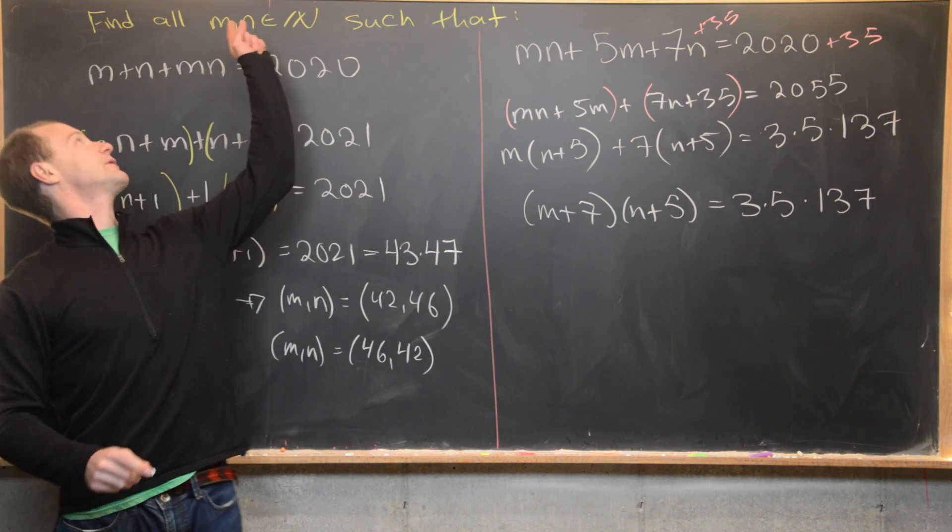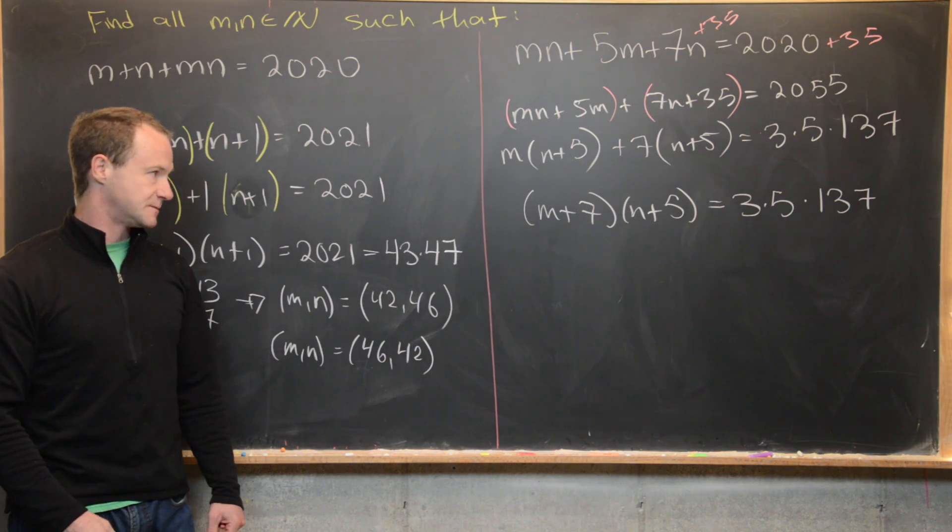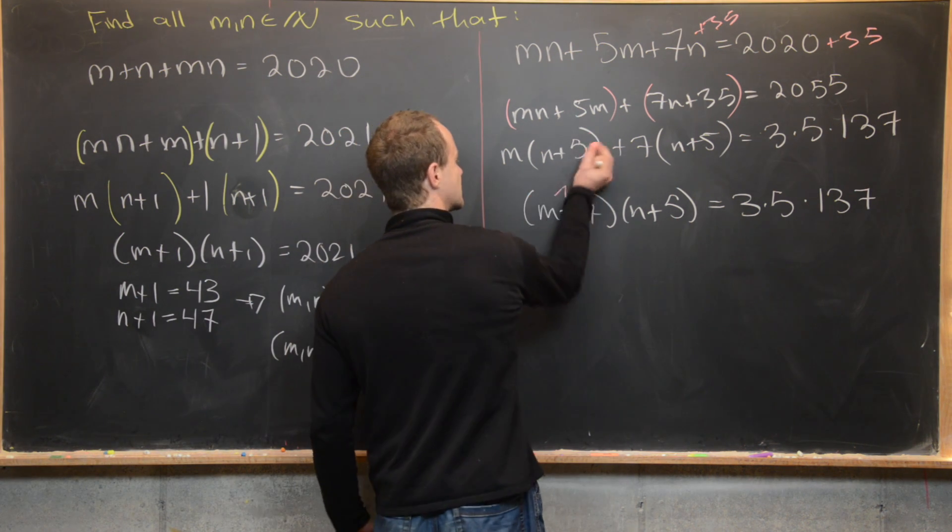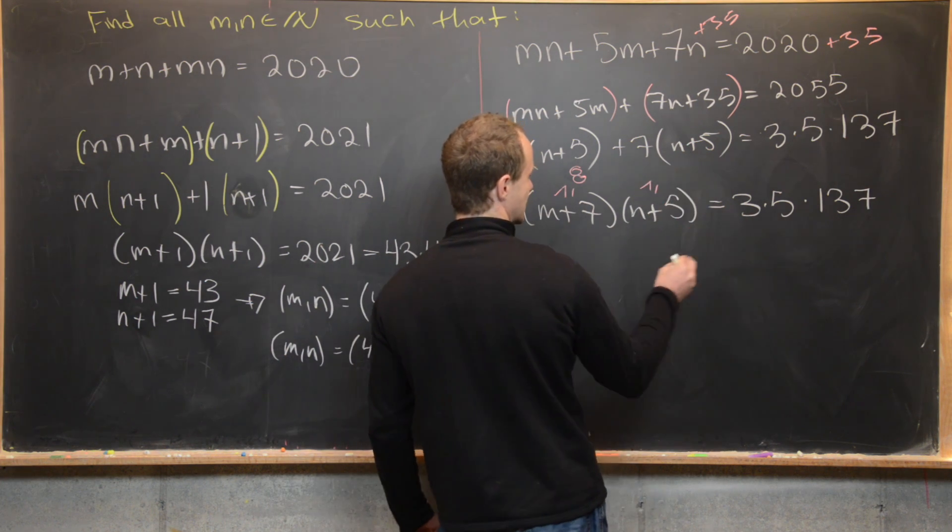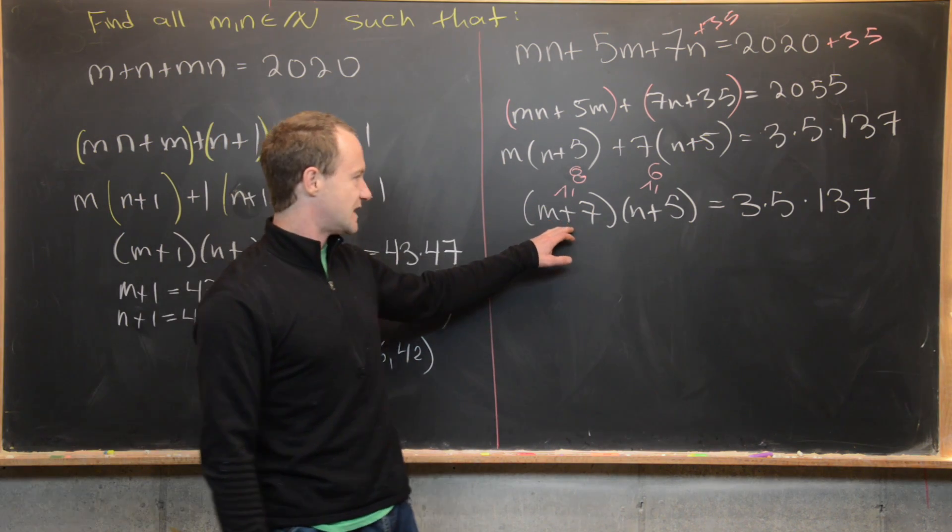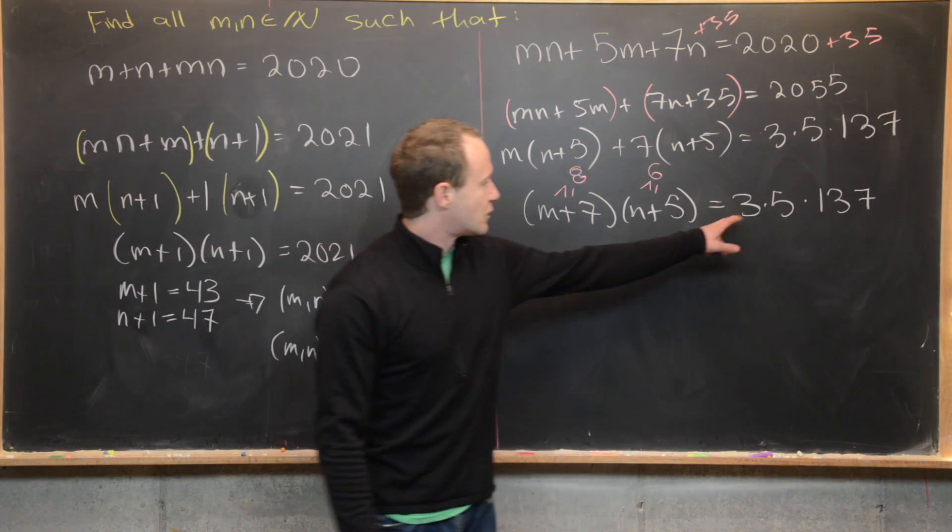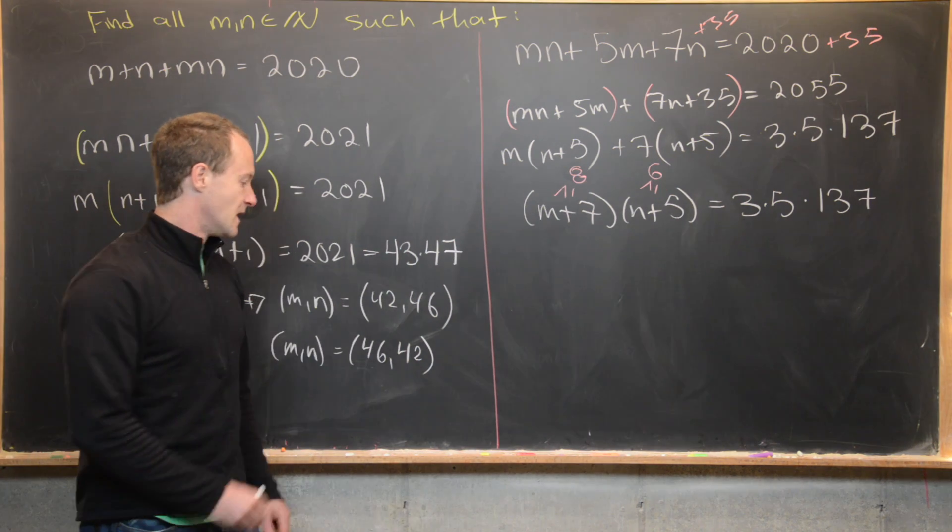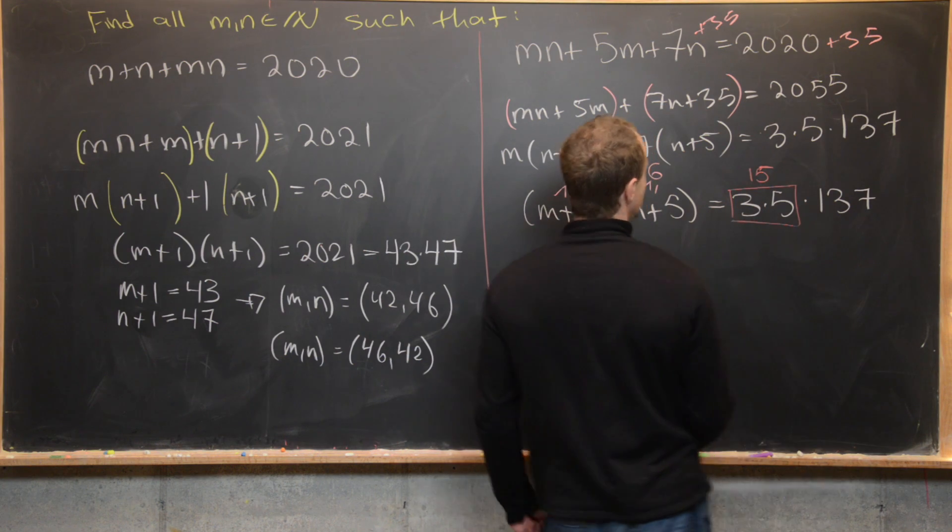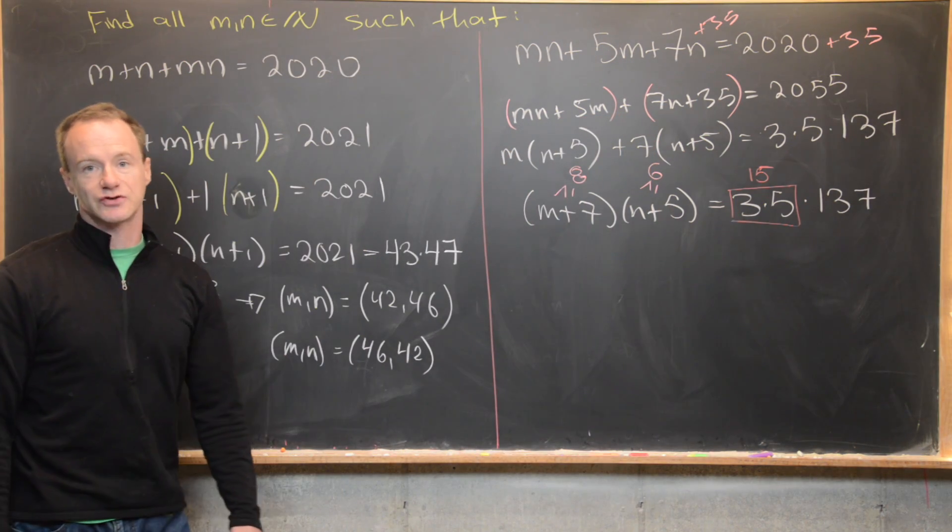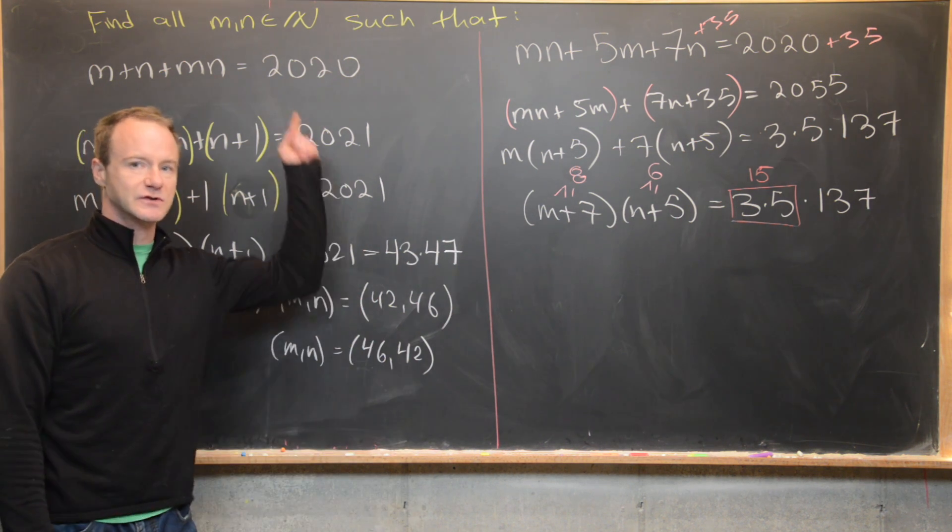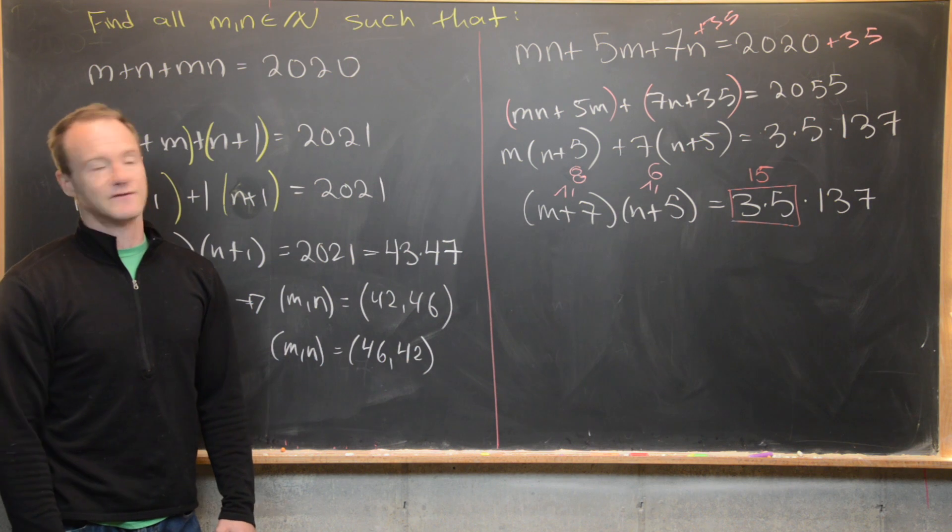Okay, now we really want to use the fact that m and n are natural numbers, which tells us that m plus 7 is going to be always bigger than or equal to 8, and n plus 5 is going to be always bigger than or equal to 6. So that means it's impossible for n plus 7 or n plus 5 to be equal to 3 or 5. But that tells us that we have to group this 3 times 5 together into 15 if we want to have our solution over natural numbers like this. We could have our solution over integers if we relax that a little bit, but for solutions over natural numbers, we need to group that 3 and 5 together into 15. That's going to give us two solutions.